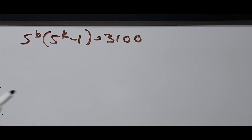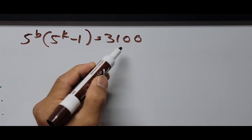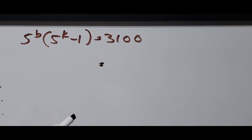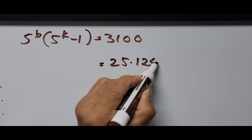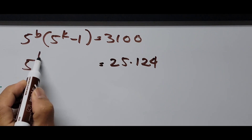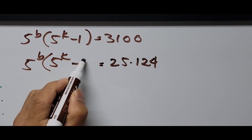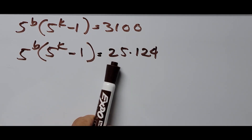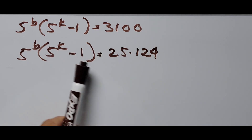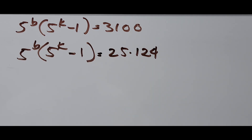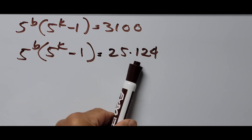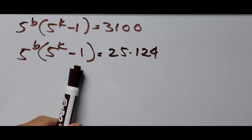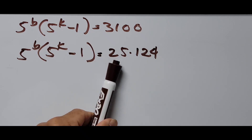We focus our attention on the right side: the constant 3100 can be written as the product of 25 and 124 — that is 25 times 124 — which equals 5 raised to B multiplied by the quantity (5 raised to K minus 1). From this point, we equate the factor 5^B to 25 and the quantity (5^K minus 1) to 124. The other route is the other way around: 5^B matched to 124 and (5^K minus 1) equated to 25.